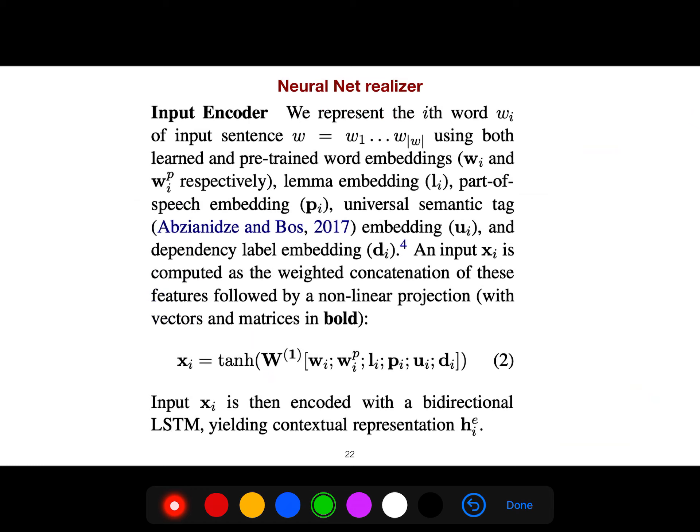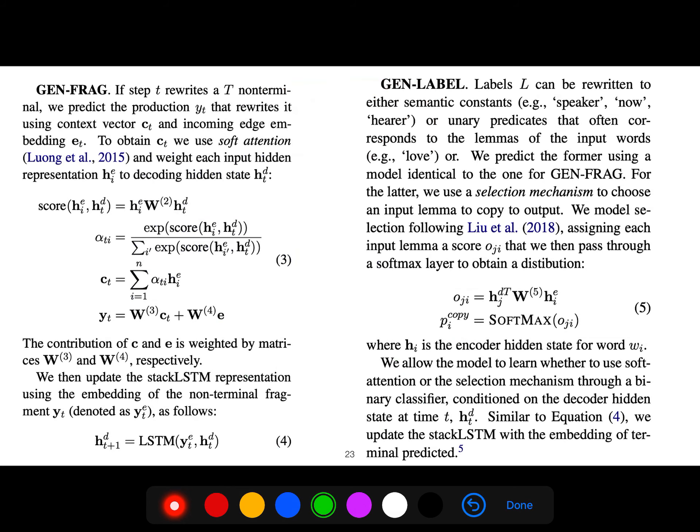We represent the encoder like this. We use tanh activation and the word embeddings. Wi is the word embedding. We also use the part of speech embedding, the Ui. For gen fragment, we obtain CT using soft attention. All of these are standard, and we use stack LSTM representation.